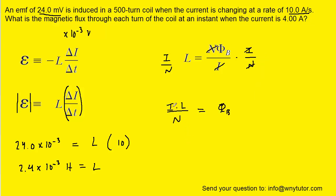And then we can plug in the known value for the current, which is 4 amps, the number of turns in the coil, which was 500, and then L, the inductance we just figured out.